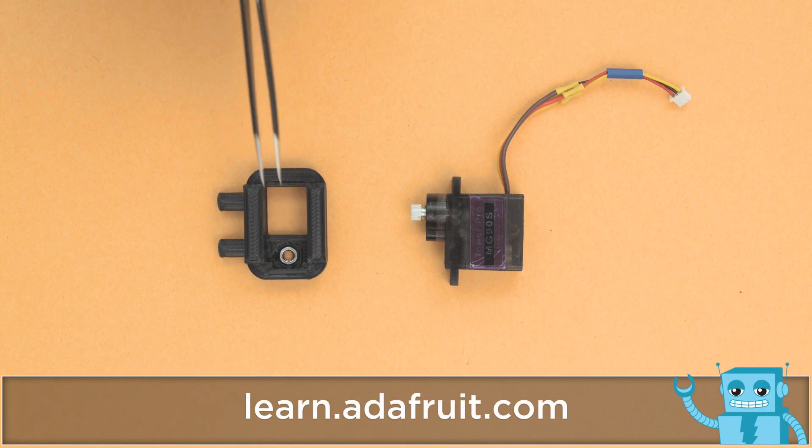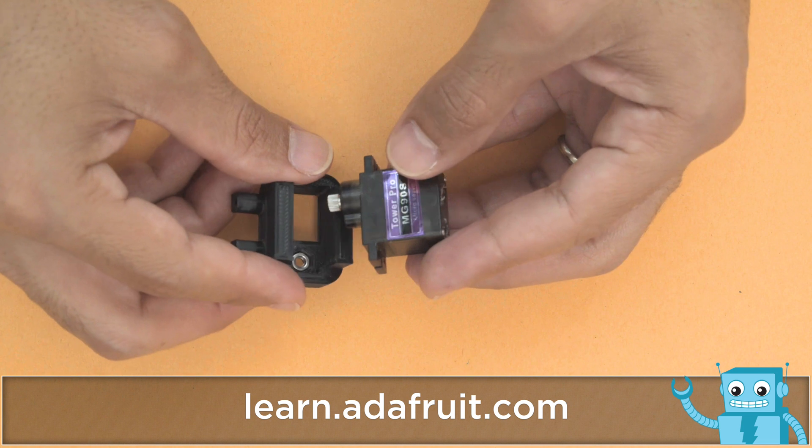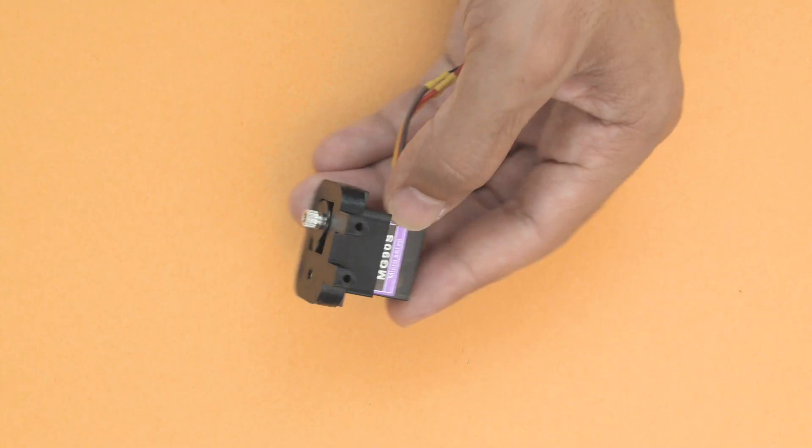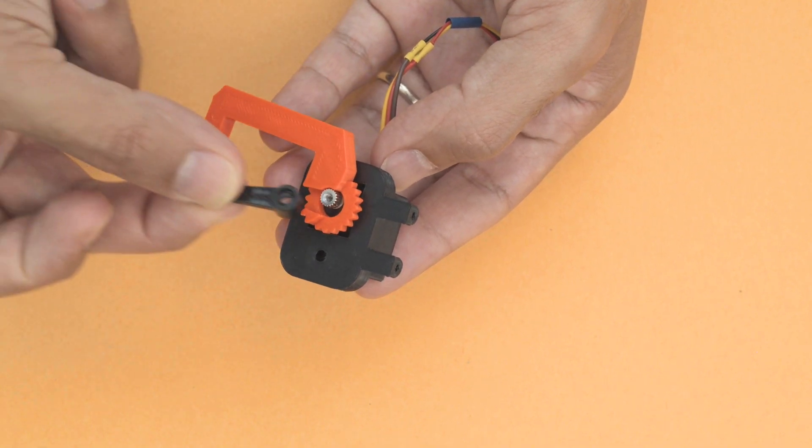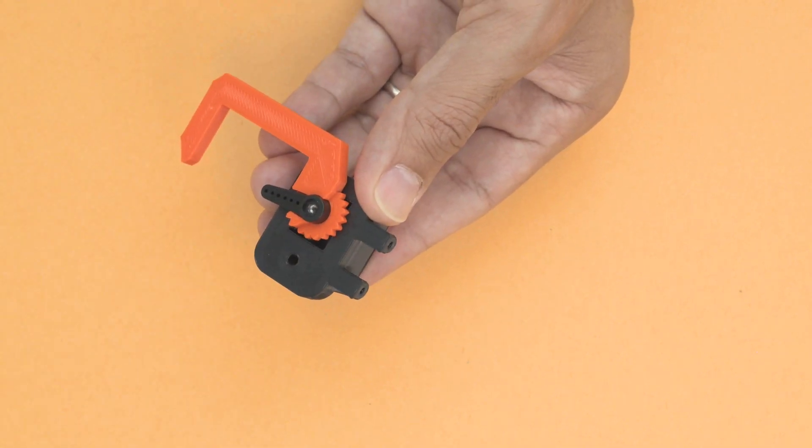The servo is press-fitted into this holder with the shaft fitted through the opening. The arm of the claw is fitted over the shaft and secured to one of the servo arms.